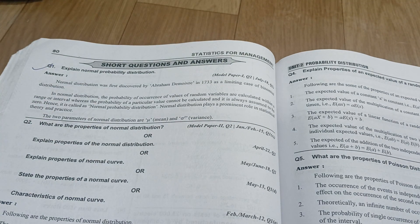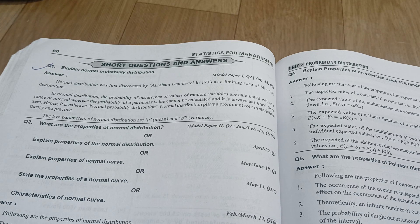Normal probability distribution is about random variables calculated within a range. When we assume a zero normal distribution, it plays a prominent role in statistic theory where most chances occur.